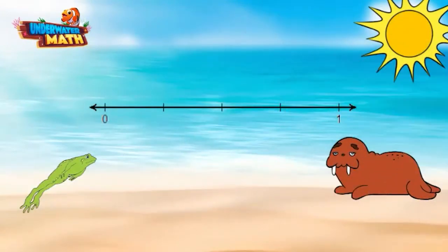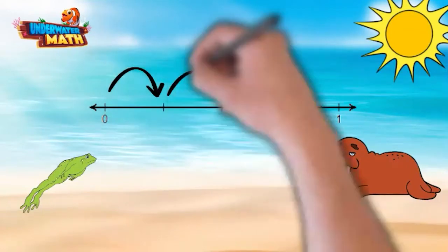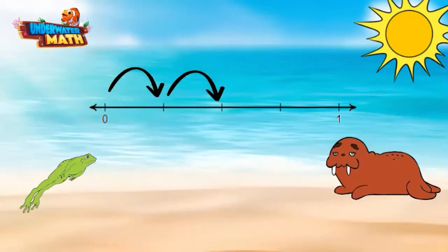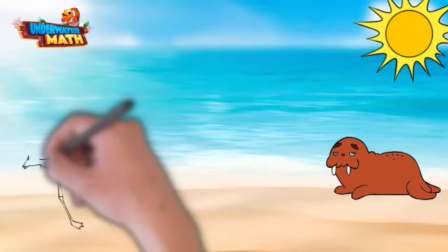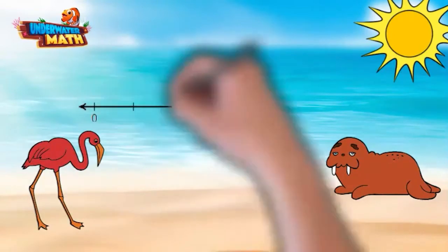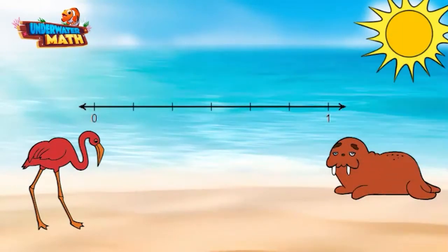Let's say this number line represents one meter. Hopper can jump two-fourths of a meter. This is one way to represent two-fourths on a number line. Boing boing! Hi Wally! Hi Fran! I can fly five-sixths of a mile.